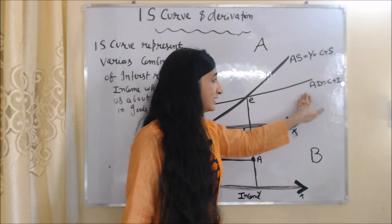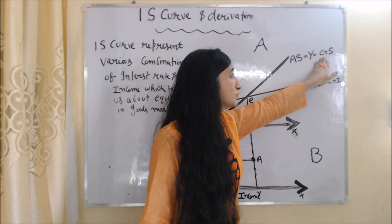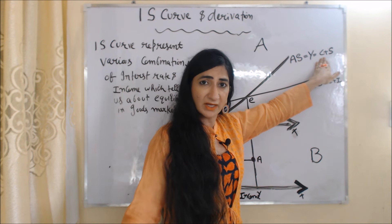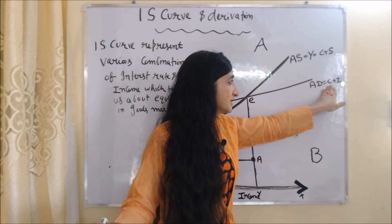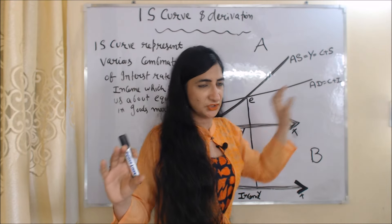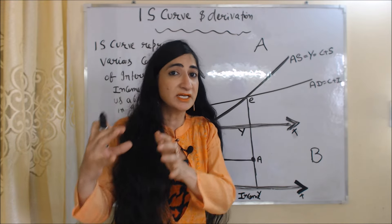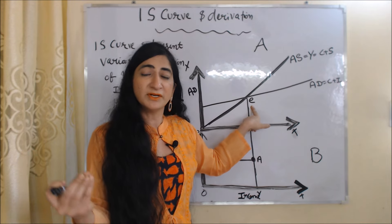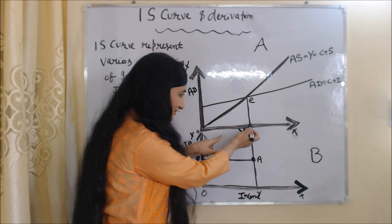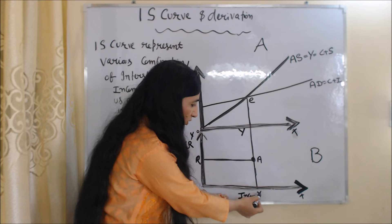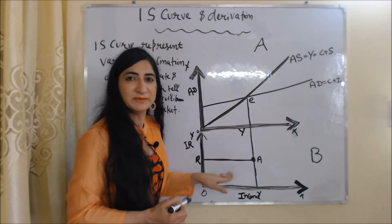AS is the aggregate supply curve and AD is the aggregate demand curve. As we know, aggregate supply equals income (Y), and income equals C plus S — consumption plus saving. Aggregate demand equals C plus I — consumption plus investment. At point E, aggregate demand equals aggregate supply, which means saving equals investment. This point tells us about equilibrium in the goods market. At this equilibrium, our income is OY. We extend this income line into the second diagram, where income is OY and interest rate is OR, giving us point A.